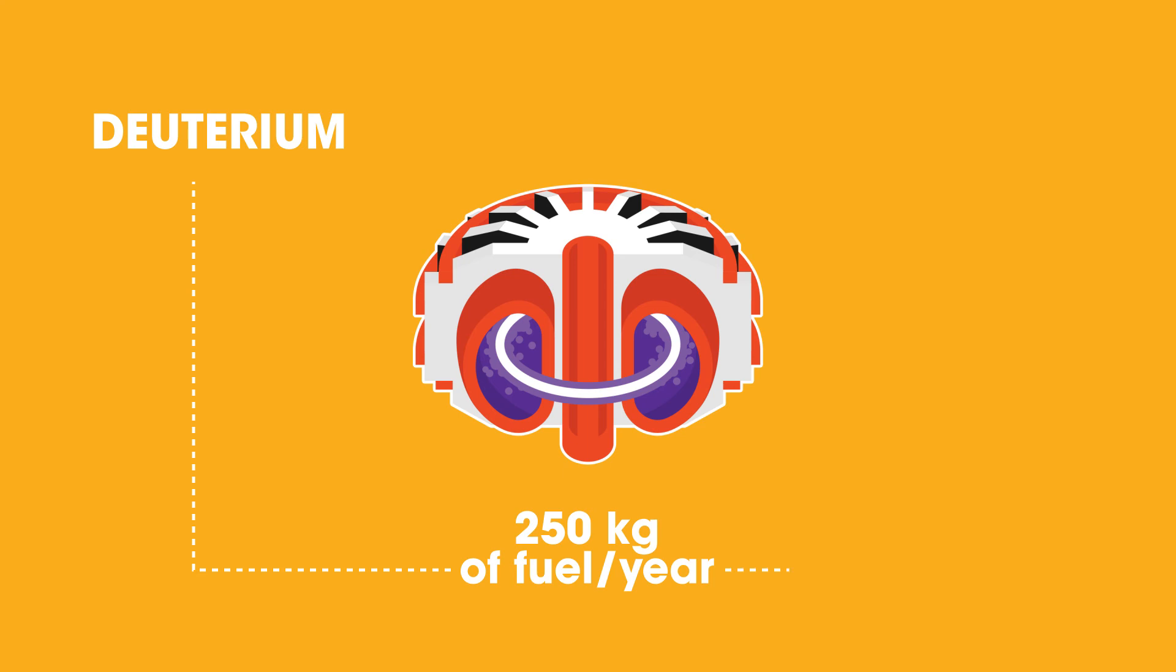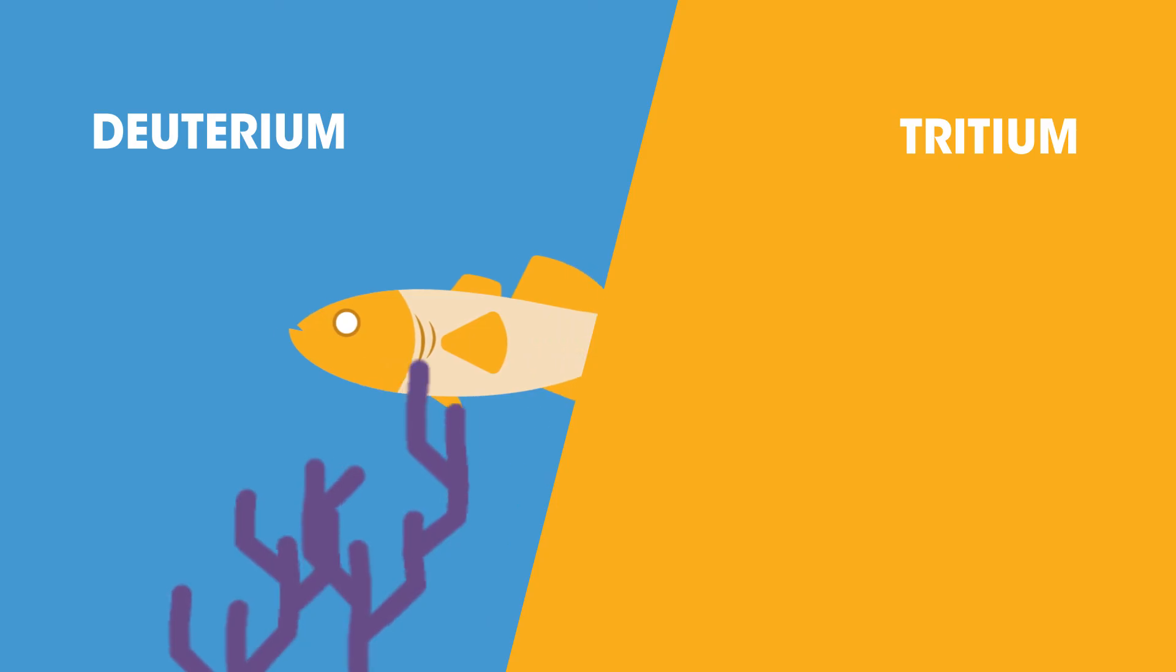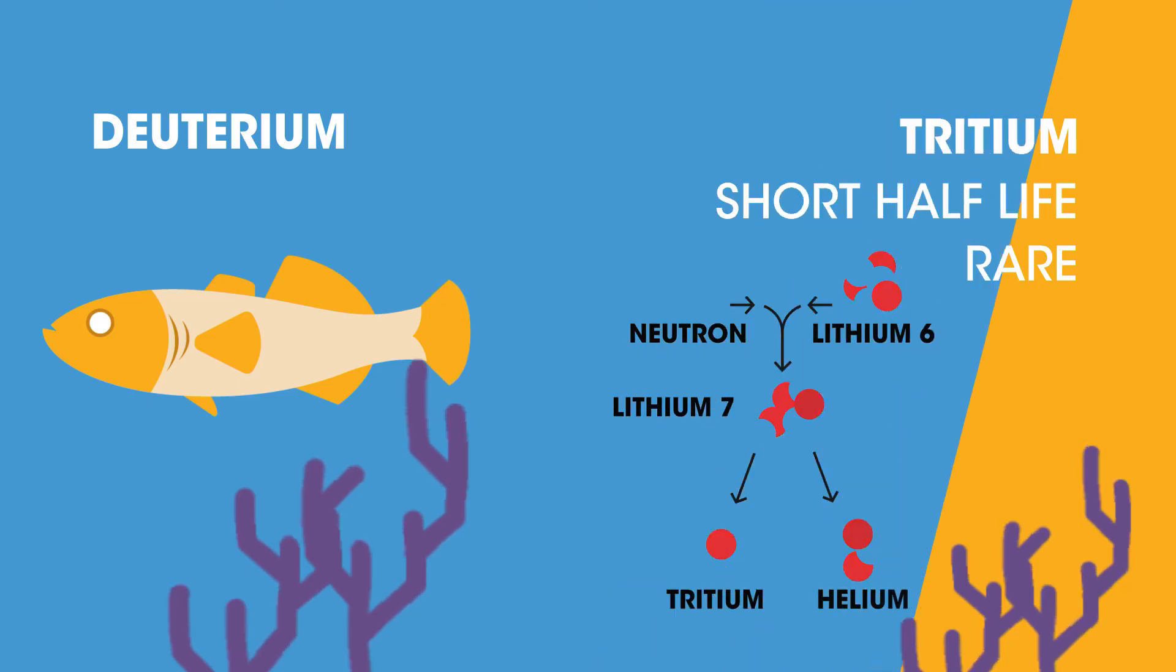Half of it deuterium and half tritium. While deuterium can be sourced from seawater, tritium, due to its short half-life and rarity, must be made via neutron bombardment of lithium, an element which seawater also contains in large amounts.